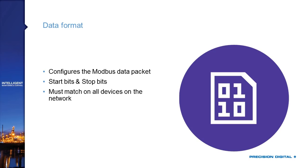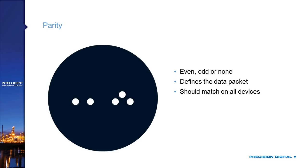Parity is another item that must match across everything on the network. Parity is set to even, odd, or none, and it defines error checking in the Modbus signal. Essentially, parity counts all the ones in the transmitted Modbus word and sends that count to the other device, which checks it against its own count. For example, with a four-bit word of 1-0-1-0, you have two ones — an even number — so a parity bit indicating 'even' is appended. If a transmission error flips a bit, the count won't match, revealing the error.